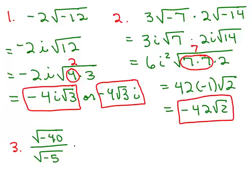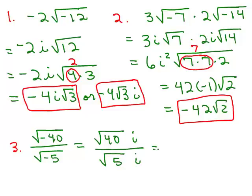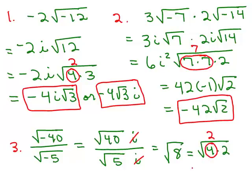For number 3 we have division. I rewrite each term with an i — you can put the i in front of the square root or behind it, but not underneath it. If I write it behind, the i's cancel out. So now I just have the square root of 40 over the square root of 5, which is the square root of 40 over 5, and that equals the square root of 8. Simplifying the square root of 8 as the square root of 4 times 2, I take the 2 out and get the final answer: 2 square root of 2.